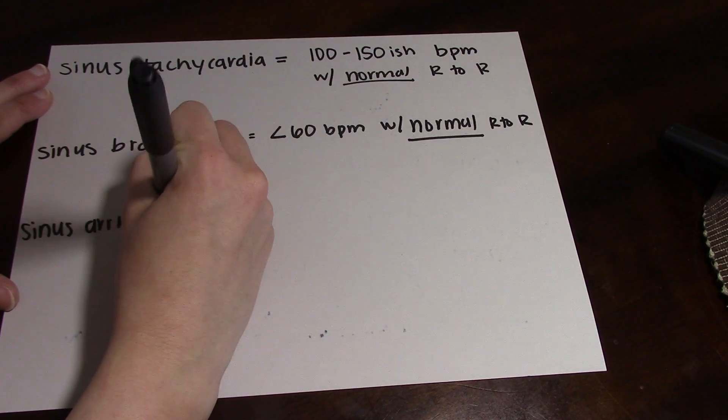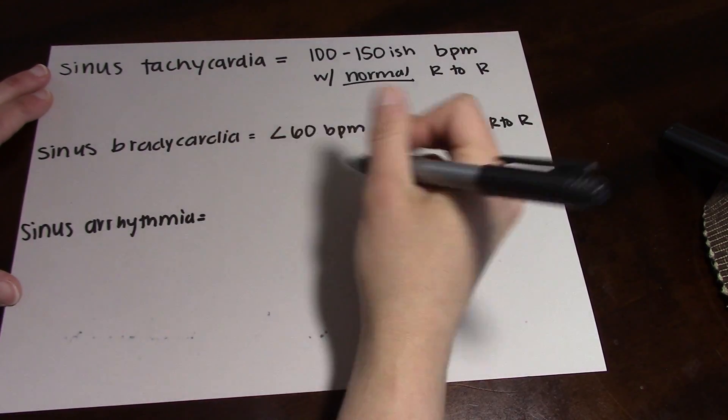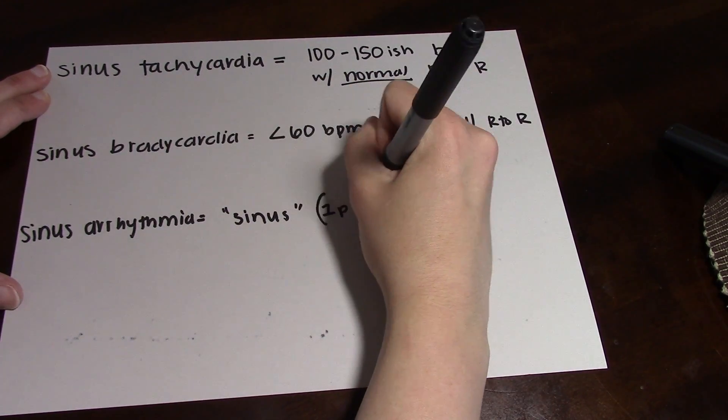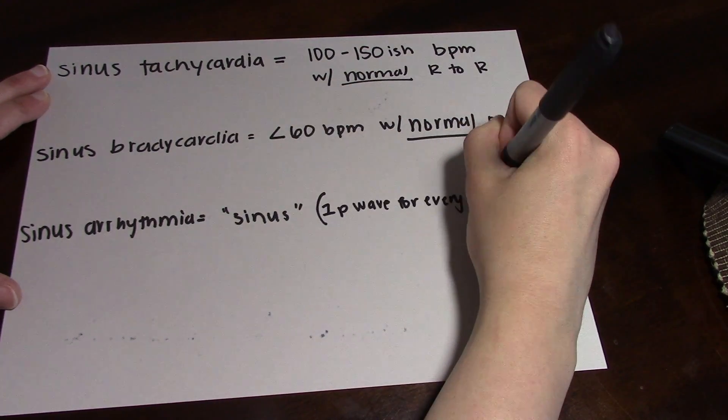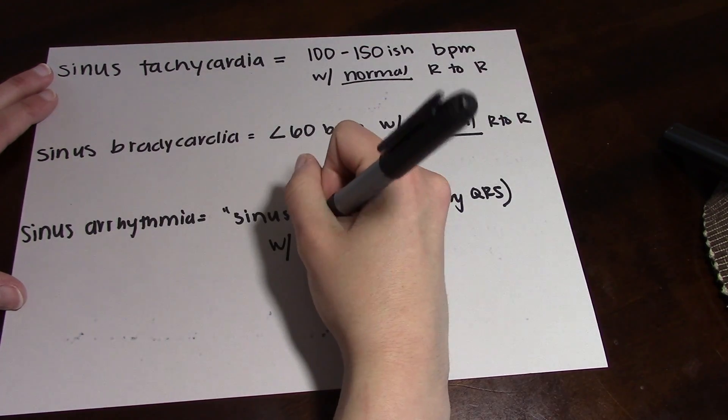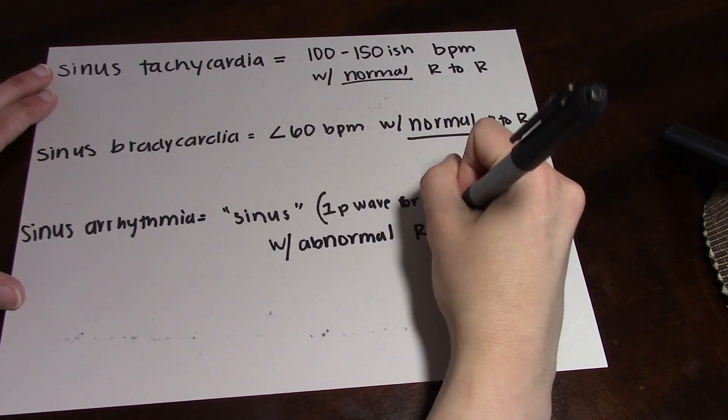The next one is a sinus arrhythmia, and this doesn't have any set beats per minute, but the difference is that your R to R's are going to be off. They're not going to all be even. So you'll still have one P wave for every QRS, but your R to R's are going to be abnormal.